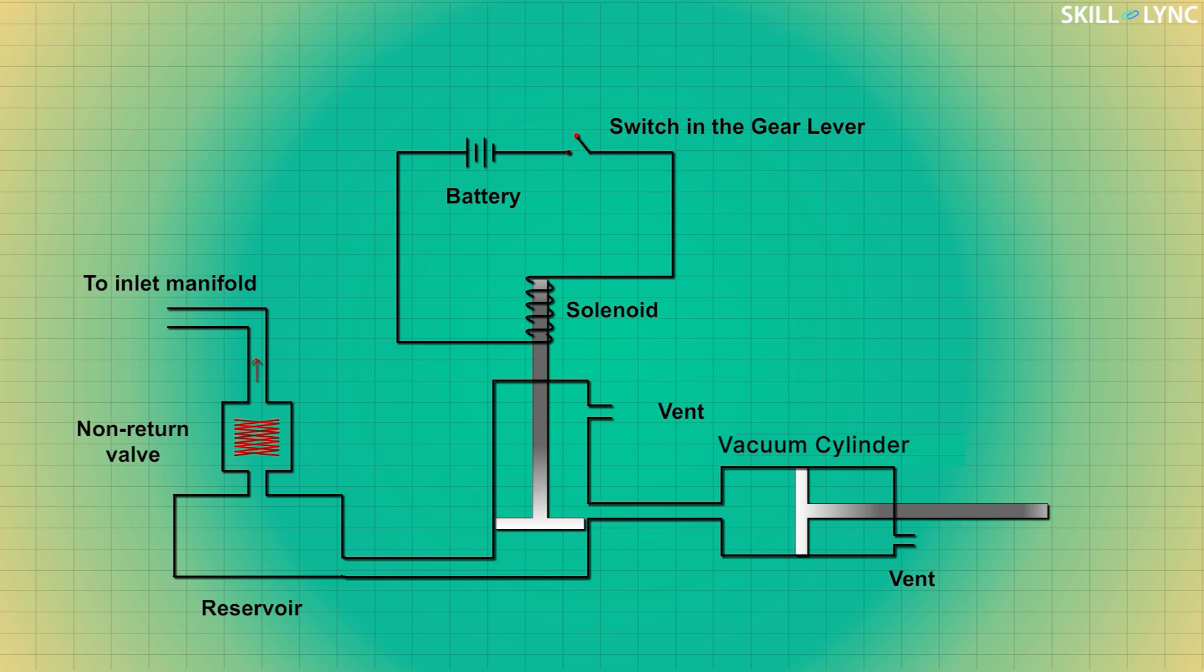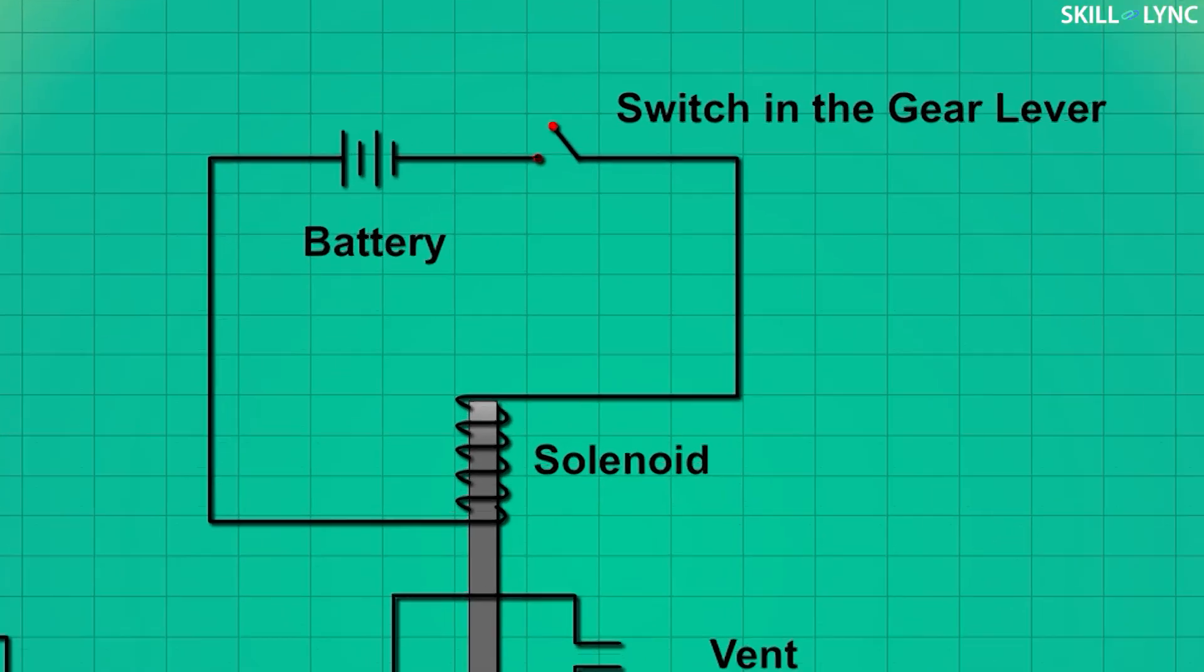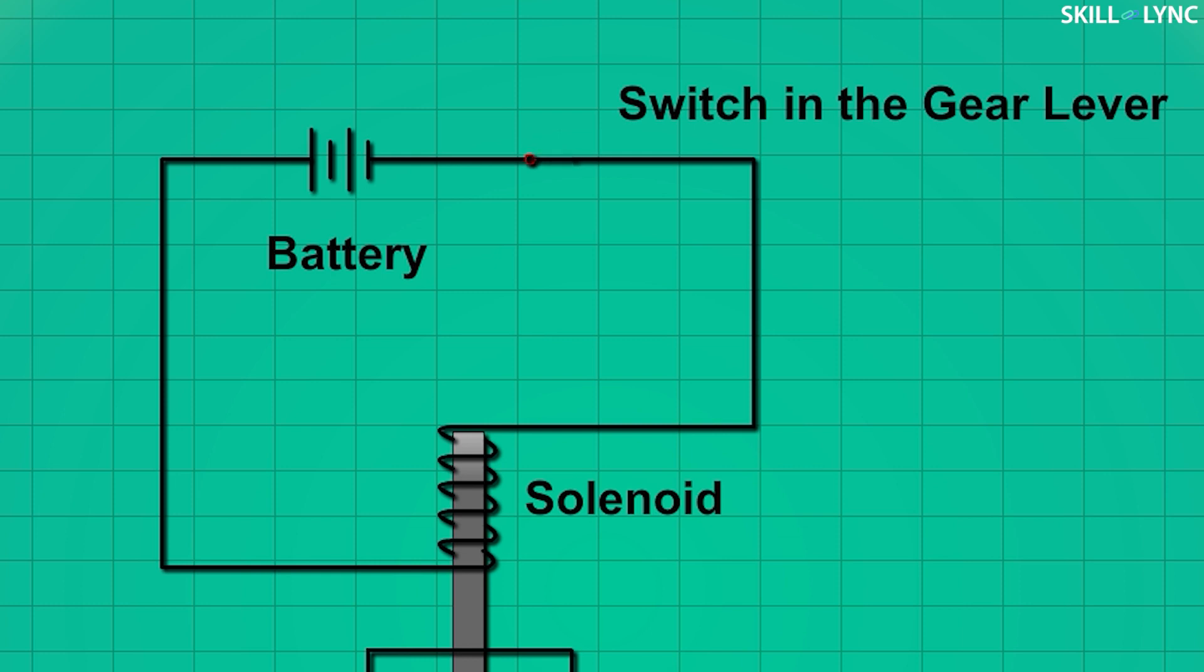During suction, a vacuum is created inside the engine. As the reservoir is connected to the inlet manifold, the pressure in the reservoir pushes the non-return valve and makes it close. Thus the connection between the reservoir and engine manifold will be cut off and a vacuum remains in the reservoir. Now when the driver holds the lever to change the gear, the switch closes the circuit.